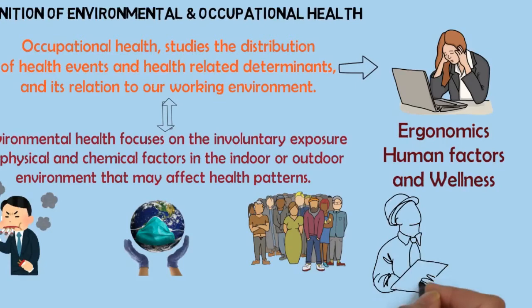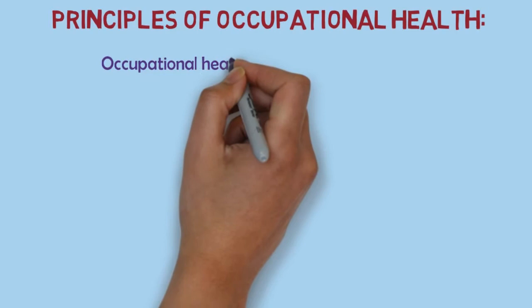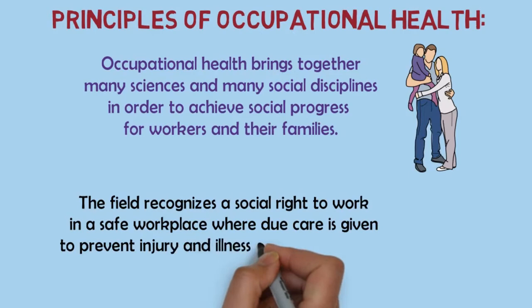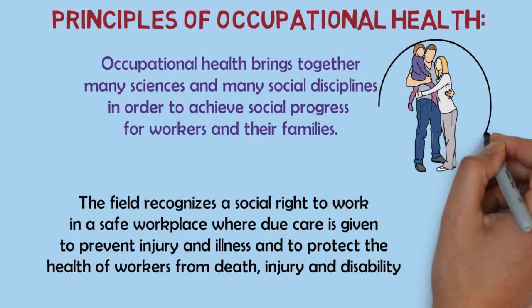How are these achieved? These are achieved by the working principles of occupational health. Occupational health brings together many sciences and many social disciplines in order to achieve social progress for workers and their families. The field recognizes social rights to work in a safe place where due care is given to prevent injury and illness and to protect the health of workers from death, injury and disability, thereby also protecting their families and those who depend on them against loss of income and social support.